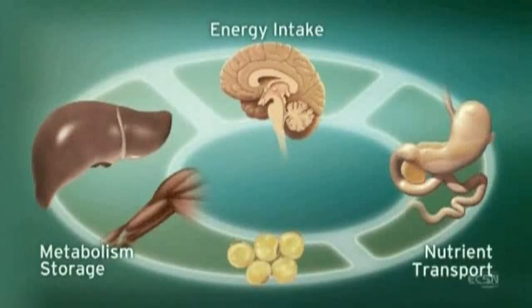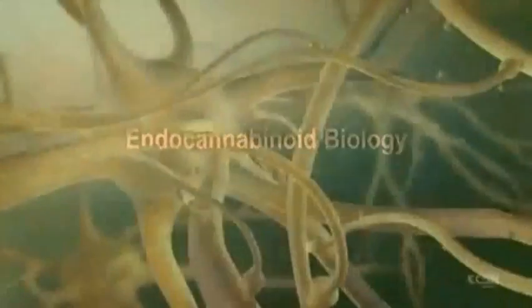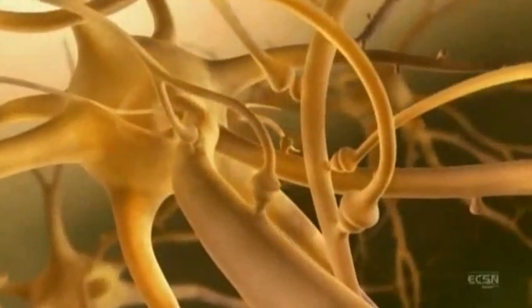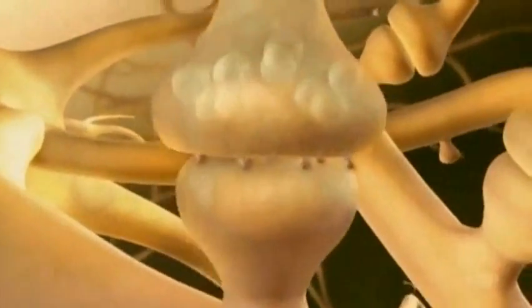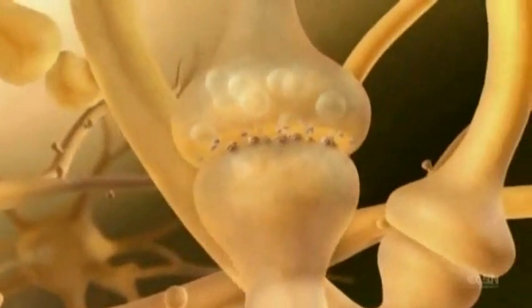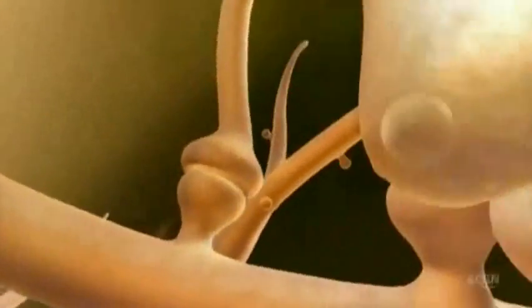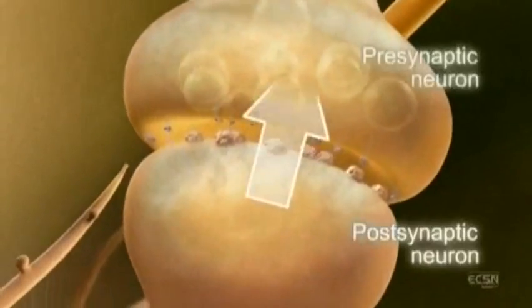Integration of these central and peripheral ECS components is achieved through neuronal and hormonal signaling. Within the brain, CB1 receptors are among the most abundant G-protein-coupled receptors. However, in contrast to classical signaling, where information travels from pre- to post-synaptic neurons, the ECS uses retrograde signaling — information travels from post- to pre-synaptic neuron.